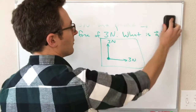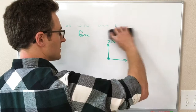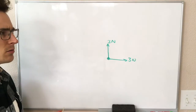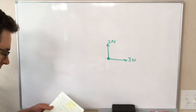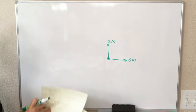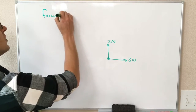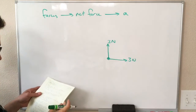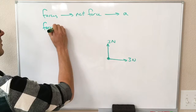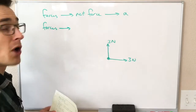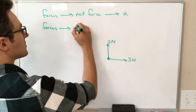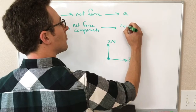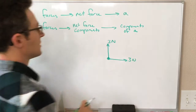There are actually two right ways to do this problem. Starting with the forces, we can go from the forces to the net force — the total force — and use that to find the acceleration. Or we can go from our forces to the components of the forces, add together the components, and this gives us the components of acceleration. We'll do it both ways.